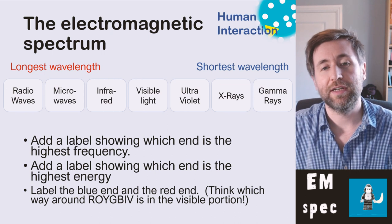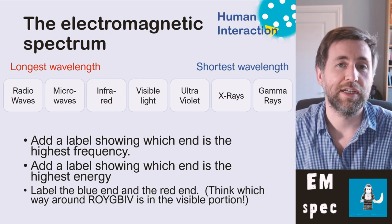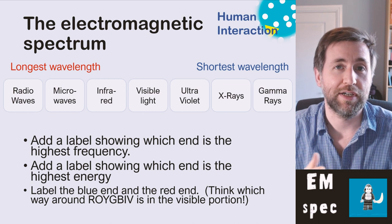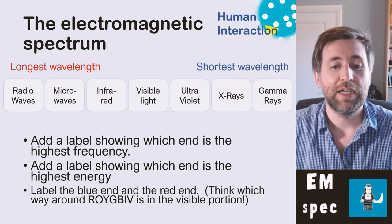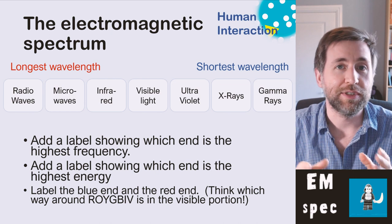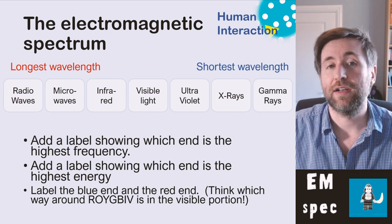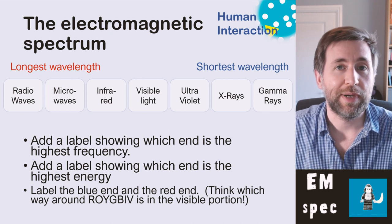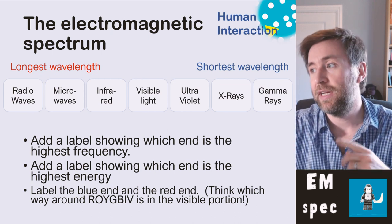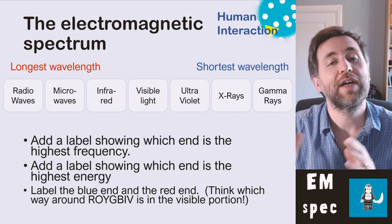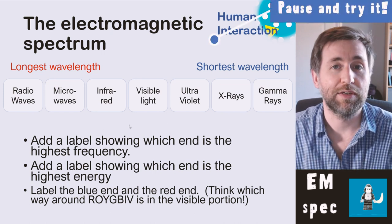Think about it like this: the higher the frequency, the higher the energy of the electromagnetic radiation. Also, label in the middle there the visible light — the red end, and the violet end. 'Richard of York gave battle in vain,' or some people like to remember Roy G. Biv. That is the colours of the visible spectrum, the colours of the rainbow, in order.